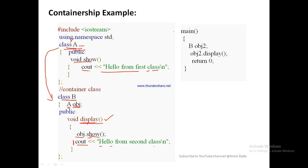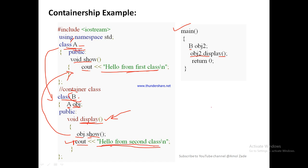When we move towards execution, it starts with the main function. We have created the object of B class: B OBJ, and called OBJ.display(). Control moves towards the display function. Inside display, the first statement is OBJ.show(), where OBJ is the object of class A and show is the member function from class A. Control moves to the show function and executes 'hello from first class'. After printing that, it returns to display and prints the next statement 'hello from second class'. So the output is: hello from first class, and hello from second class.